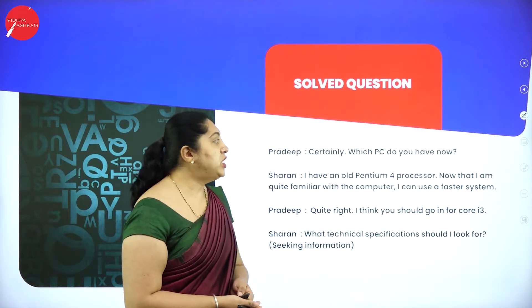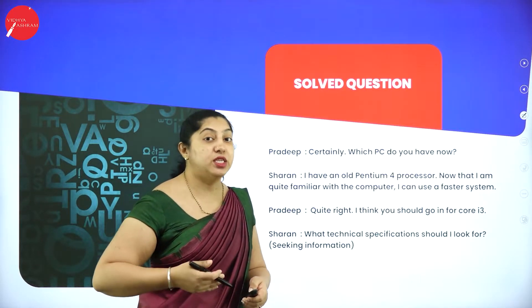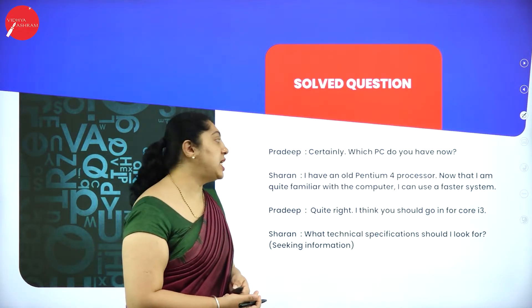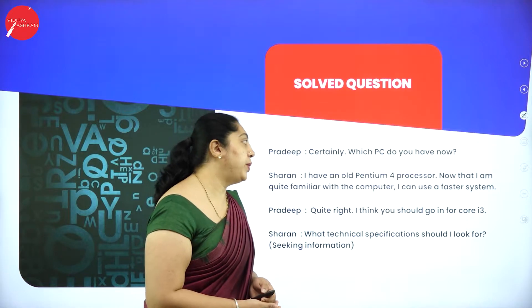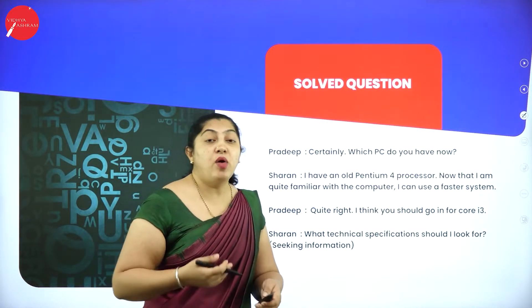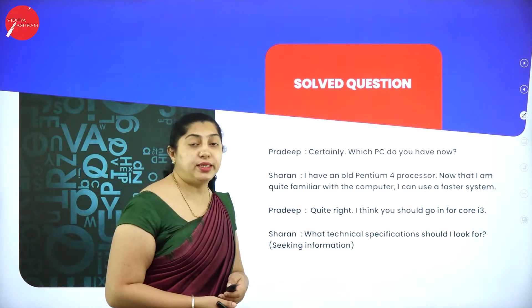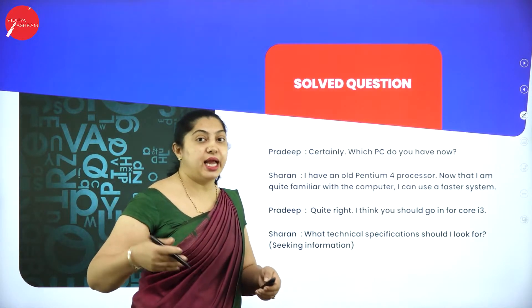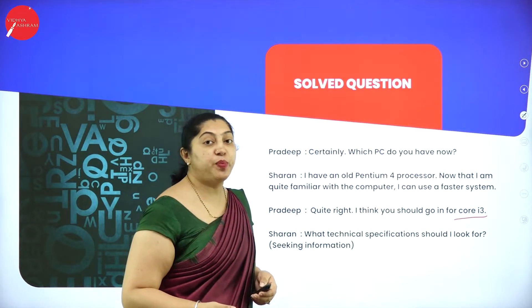Pradeep says: 'Certainly. Which PC do you have now?' He wants to know what kind of PC Sharon is currently using. Sharon replies: 'I have an old Pentium 4 processor. Now that I am quite familiar with the computer, I can use a system where I can work a bit faster.' Pradeep says: 'Quite right. I think you should go for a Core i3.' For personal use, he recommends a Core i3.